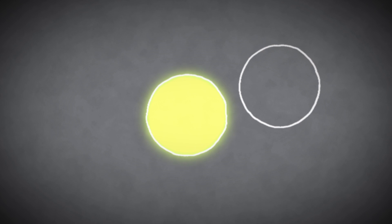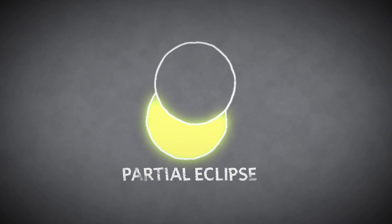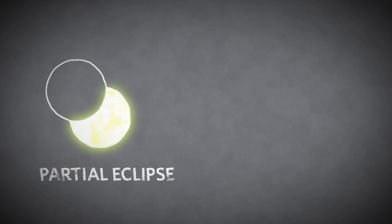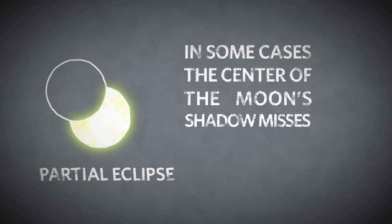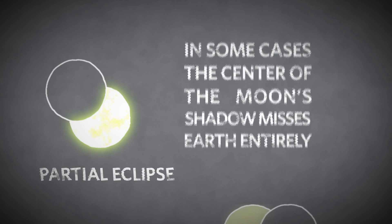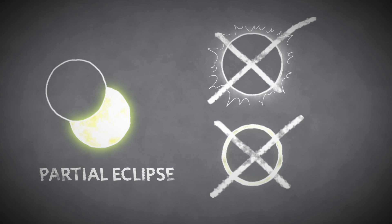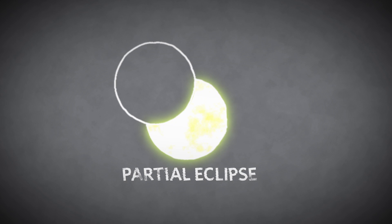Observers not located on the path of the moon's shadow will see only a partial eclipse, in which the moon's silhouette doesn't completely block the sun from view. In some cases, the center of the moon's shadow misses Earth entirely, and no one gets to see totality or the annulus, although a partial eclipse can still be observed.